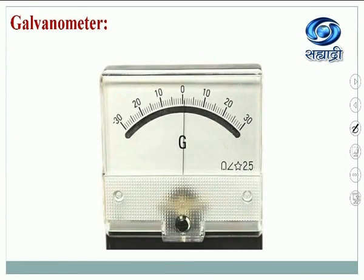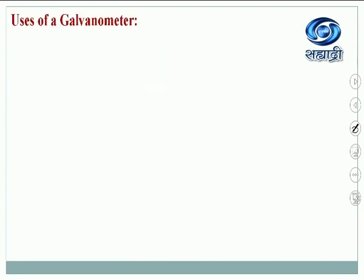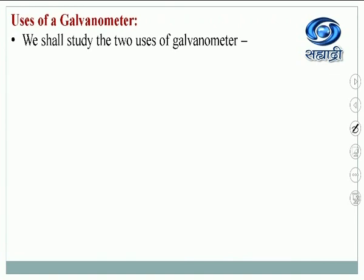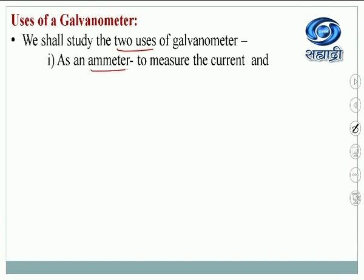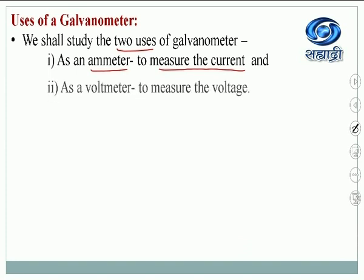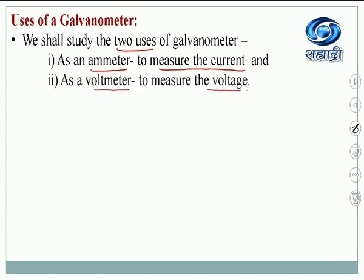This is how the galvanometer looks: when no current flows, the pointer shows zero deflection. If current is passed, it will move towards the right or towards the left depending on how much current is flowing. The two uses of the galvanometer are: one as an ammeter to measure current, and second as a voltmeter to measure voltage.